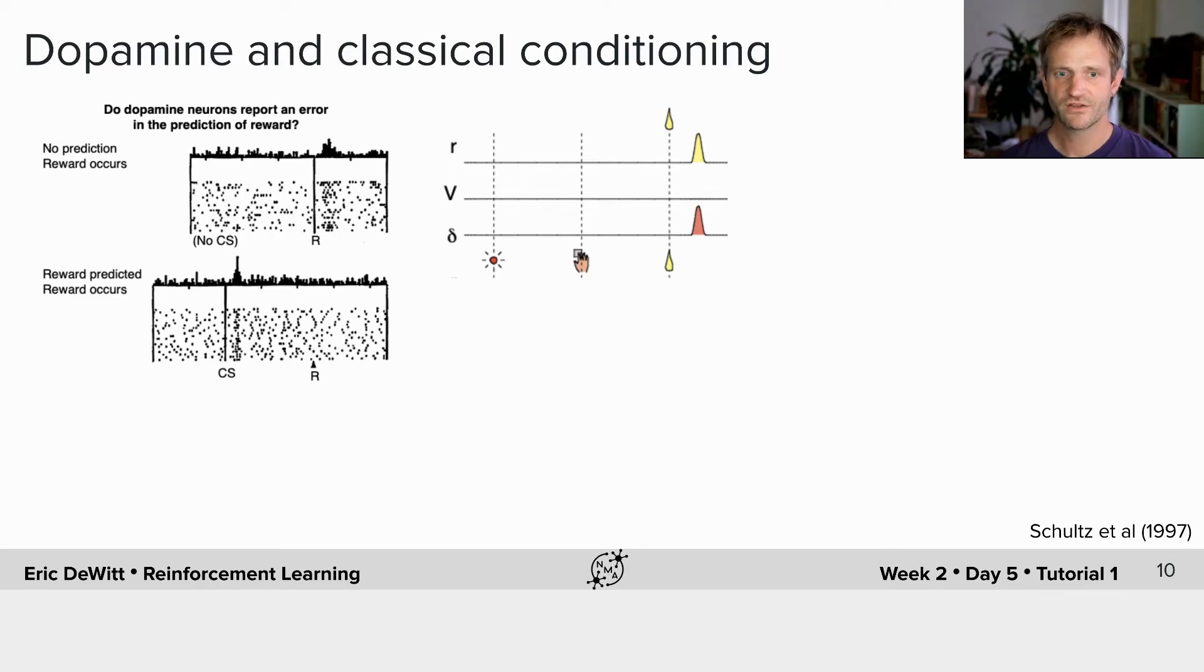After learning, the conditioned stimulus comes to predict the future reward. So when the conditioned stimulus arrives, you weren't expecting a reward, but the conditioned stimulus tells you you'll get one. And at the time of reward, you were already expecting the reward, so there's no more prediction error. In the model, what that means is there's a prediction error at the time of the cue, and then you have a value function that gives you the estimated future value until you arrive at the time of reward.